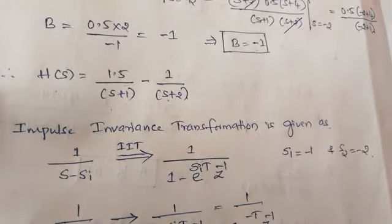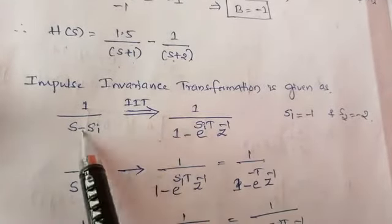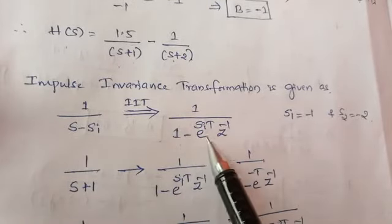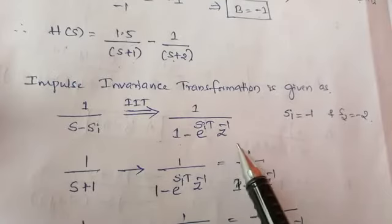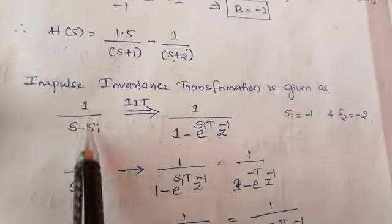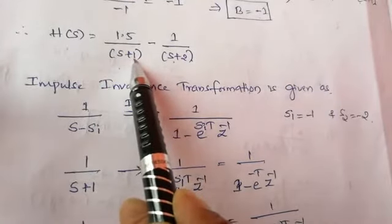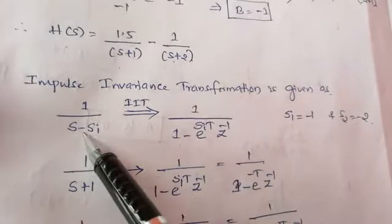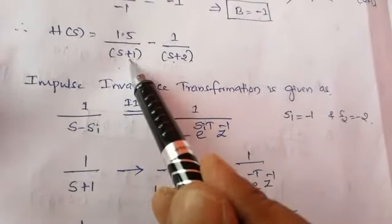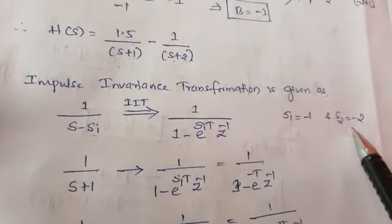Let us convert this analog filter transfer function to a digital filter using the IIT method. We know the standard pair: 1 divided by (S minus S_i) in the S-plane transforms to 1 divided by (1 minus e^(S_i * T) * z^(-1)) in the Z-plane. Here S_1 equals minus 1 and S_2 equals minus 2.